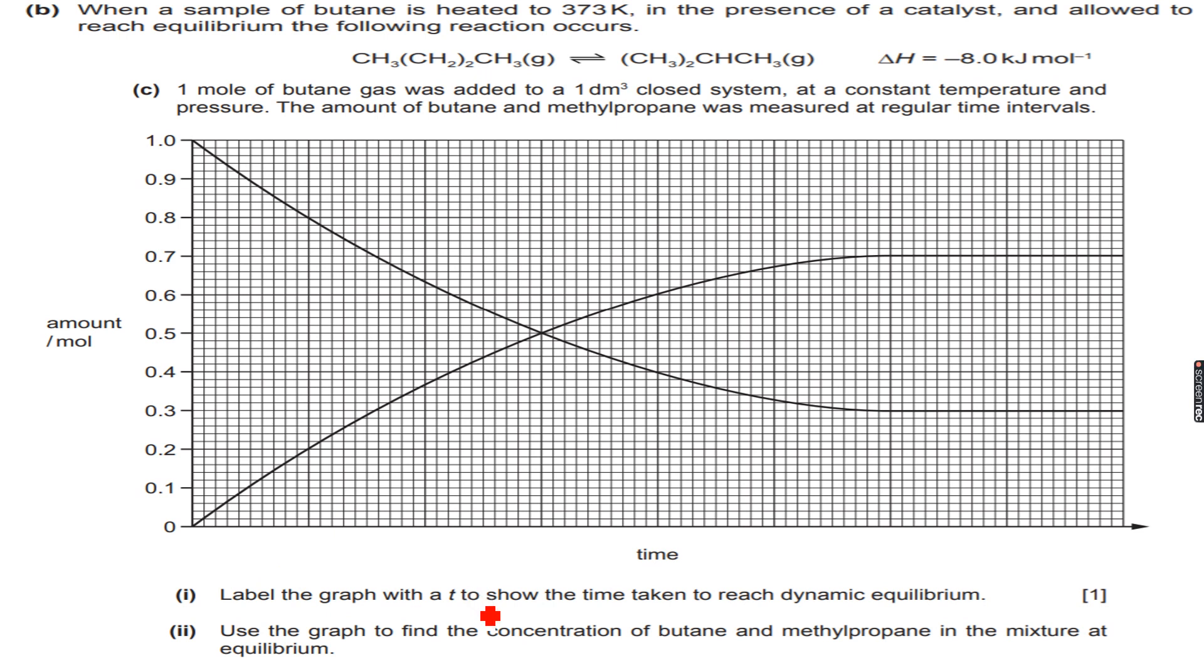Now when a reaction has reached dynamic equilibrium, the concentrations or amounts of the reactants and products remain constant. So there will be no further change in the amounts. As you can see there is a horizontal line over here and this horizontal line is starting here at this line.